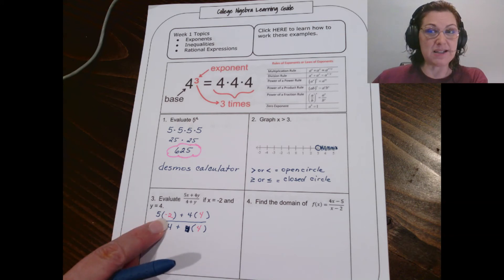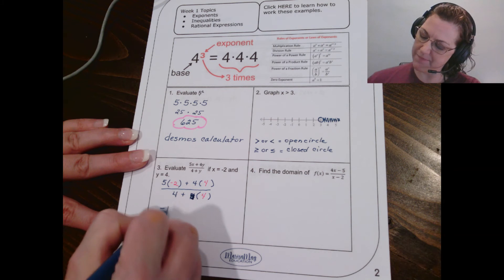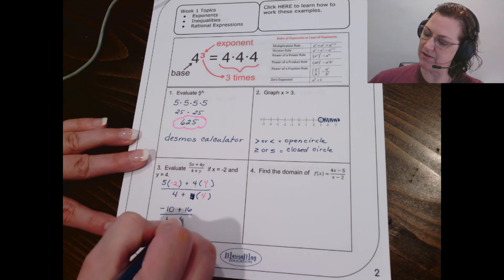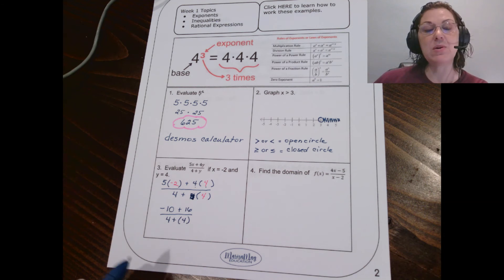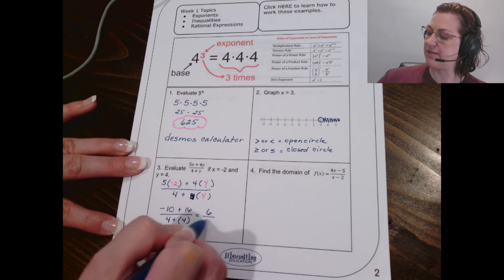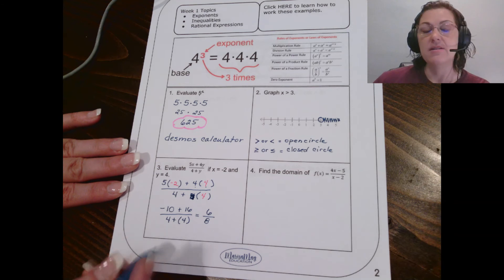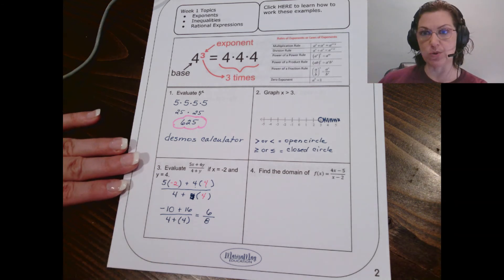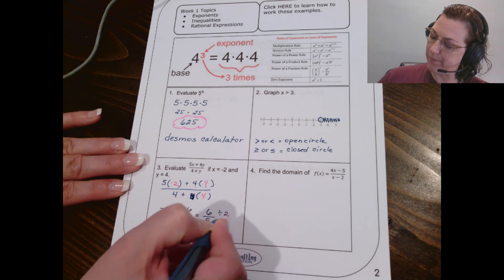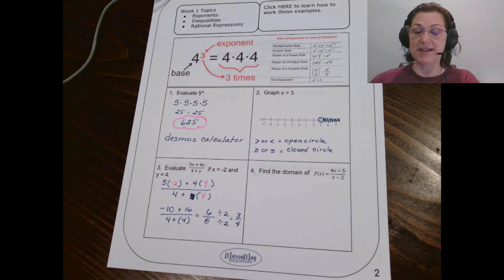Okay, now I'm going to add on the top, so negative 10 plus 16 is 6, and 4 plus 4 is 8. By the way, friends, if you're not confident with your negatives and adding positives and negatives, use your calculator for that. This is not intended that you would have to do this all on your own, but use your resources. Now we do need to go ahead and reduce this, because 6 and 8 are both divisible by 2. So that gives me 3/4, and that, friends, is my final answer.